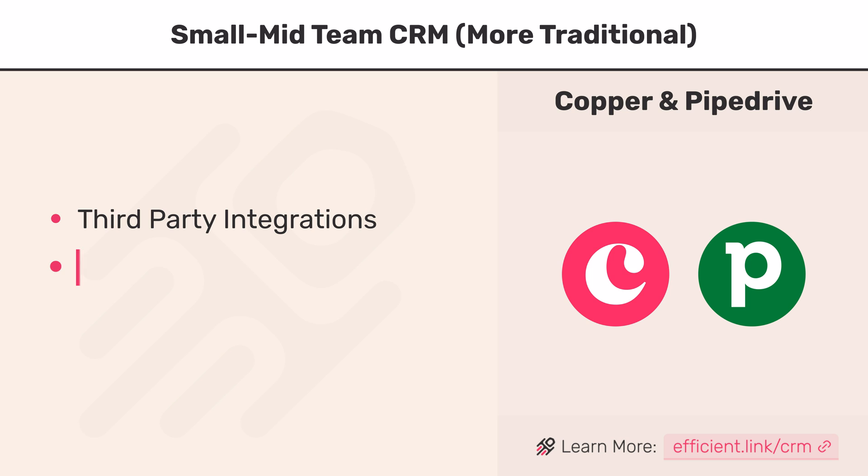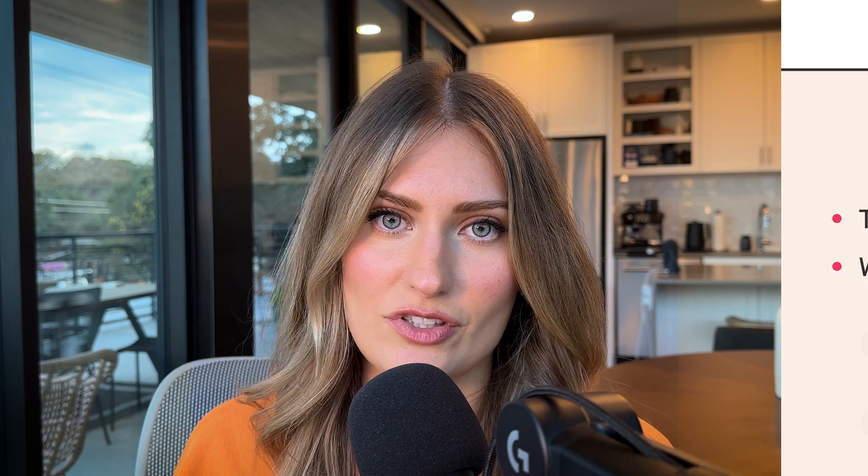Another main difference between Folk and Copper is that Copper has workflow automations, and there are dozens of uses for them. You can create auto tasks — so when a lead comes in, a task is created for someone on your team, or when an opportunity gets to a stage, your team member gets assigned a bunch of tasks, or you can auto-create an opportunity. There are honestly dozens of uses.